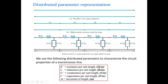These R, L, G, C are called distributed parameters. Their units are: resistance in ohms per meter, inductance in Henries per meter, conductance in Siemens per meter, capacitance in Farads per meter, and delta Z is the increment length in meters.